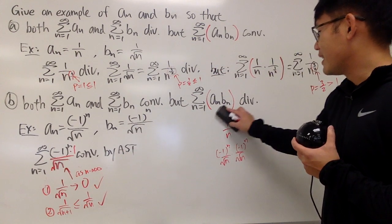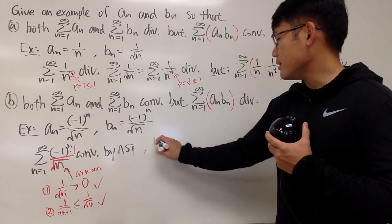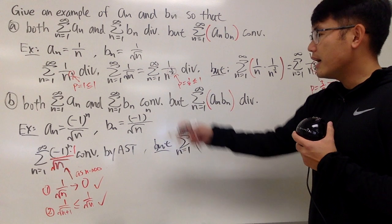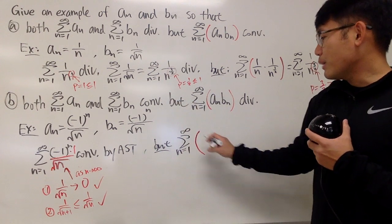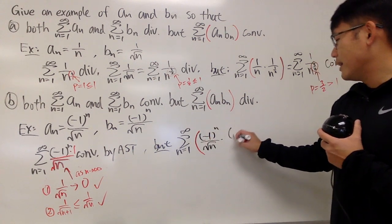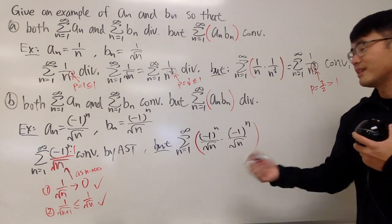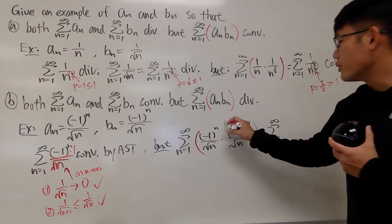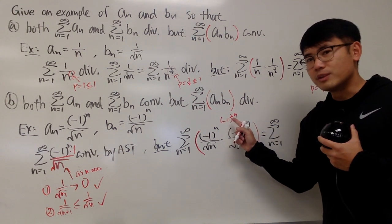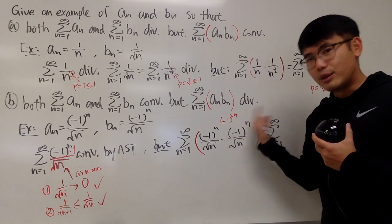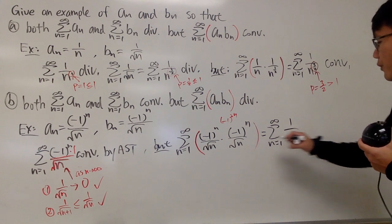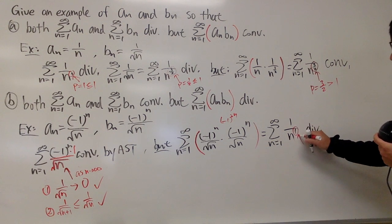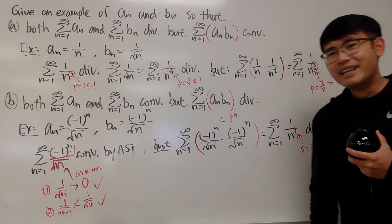When we multiply aₙ times bₙ and put it in the series, we get the sum from N=1 to infinity of negative 1 to the N times negative 1 to the N, which is negative 1 to the 2N. Using exponent rules, that's negative 1 squared to the N, which equals 1 to the N, which is always 1. So we have 1 on top over N on the bottom. This is the harmonic series, which diverges. We can also say p=1 ≤ 1 by the p-series test.